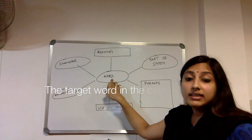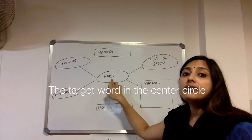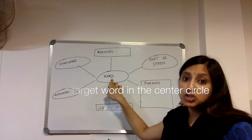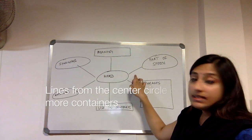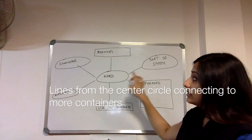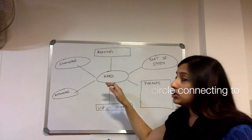comes the word, the target word, the word that you want to learn the meaning of or the word that you want to teach your students about. And from the central word come lines to which are connected more circles. Let's take a look at what each one of these should contain.